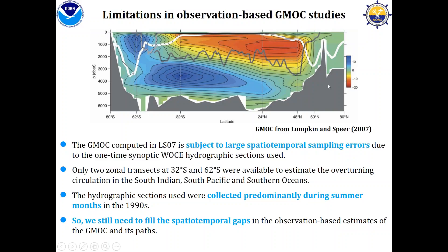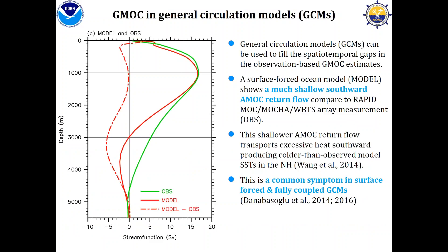To fill these spatial-temporal gaps we could use general circulation models, but they also have many issues. For instance, looking at the Atlantic MOC streamfunction at 26.5 degrees north: the green line is from the RAPID MOCHA array observation, and the red line is from a surface-forced ocean model. This model gets the maximum transport roughly right, but if you look at the structure below 1,000 meters it is not very good.